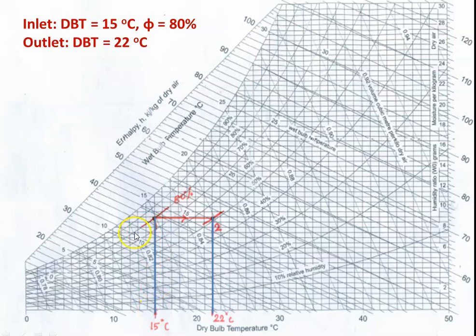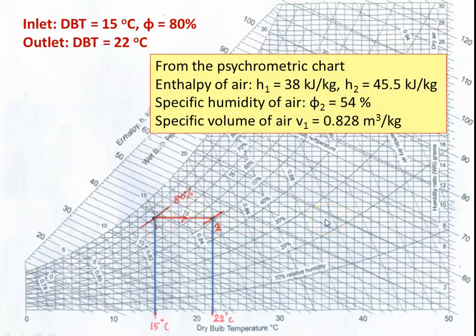From the psychrometric chart, read the required values. Enthalpy H1 = 38 kJ/kg, H2 = 45.5 kJ/kg. The relative humidity of the air at the outlet is 54%. The specific volume of air at inlet point 1 is 0.88 m³/kg. These are the properties we take from the psychrometric chart for our calculations.